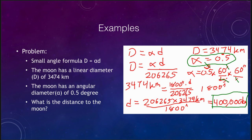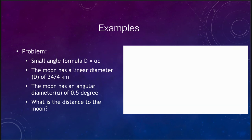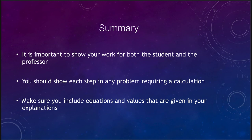To summarize showing your work: show the equation you used, write down the numbers you were given, show any unit conversions needed, plug those numbers into your equation, rearrange as needed, and perform the final calculation. Show each of those steps along the way. In this case, we find that the Moon is about 400,000 kilometers away. It is very important to show work — it's important to both the student and the professor.